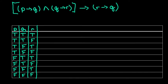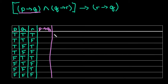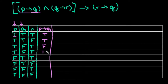Our next column is the conditional P then Q. Remember, a conditional is true in every situation except when the if-part is true followed by a false then-part. True-true is true, true-true is true, true-false is false, true-false is false. False-true is true, false-true is true, false-false is true, false-false is true. So P then Q is only false when you have true followed by false.